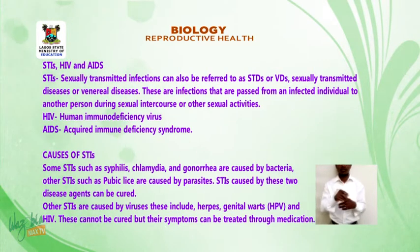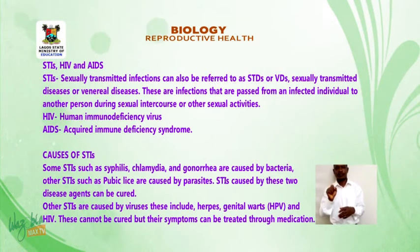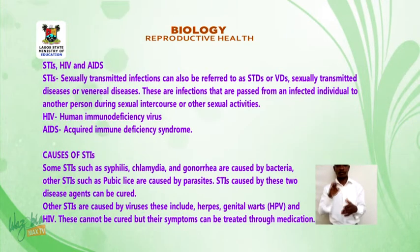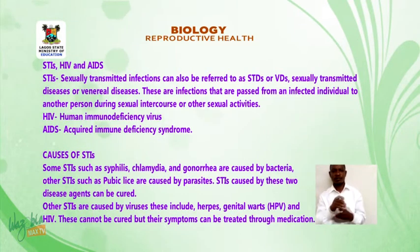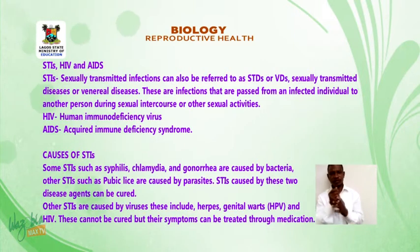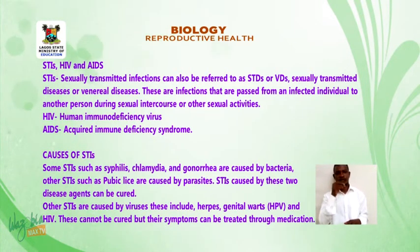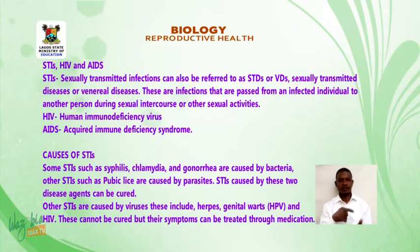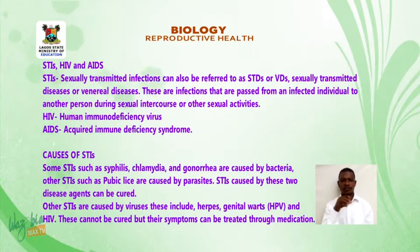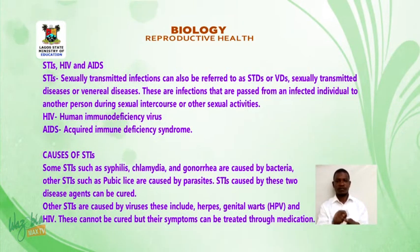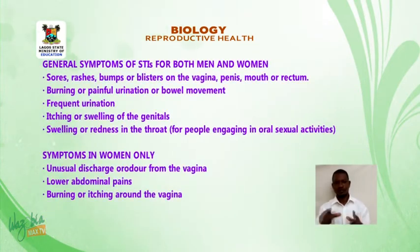Causes of STIs: some STIs such as syphilis, chlamydia, and gonorrhea are caused by bacteria. Other STIs such as pubic lice are caused by parasites. STIs caused by these two types of disease agents can be cured. Other STIs are caused by viruses — this includes herpes, genital warts, HPV, and HIV — and these cannot be cured, though their symptoms can be treated through medication.